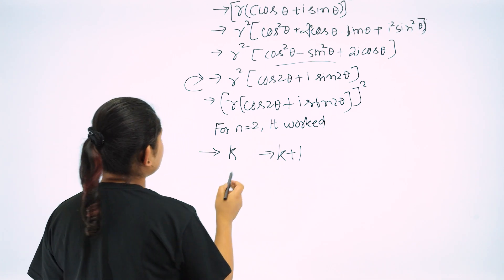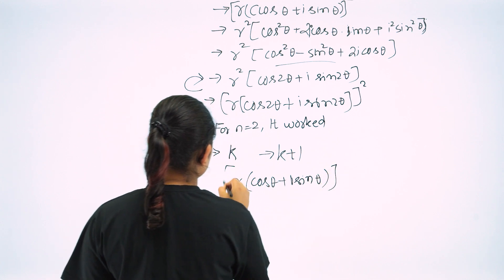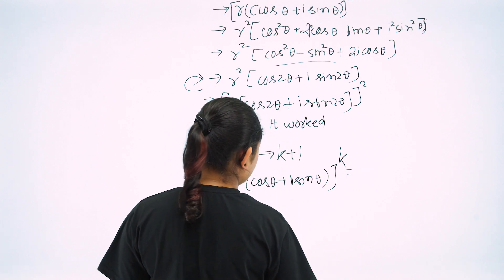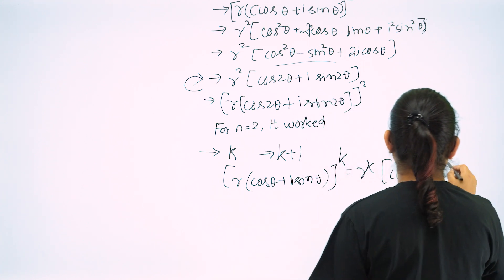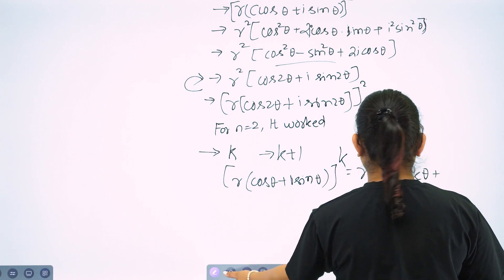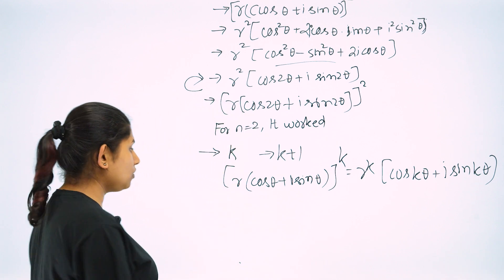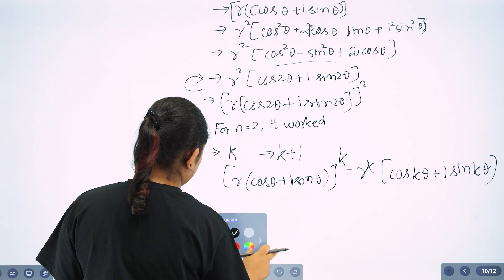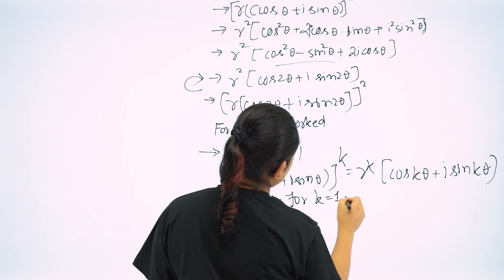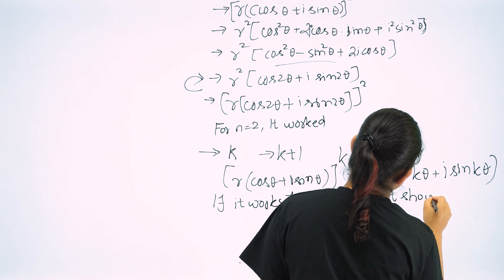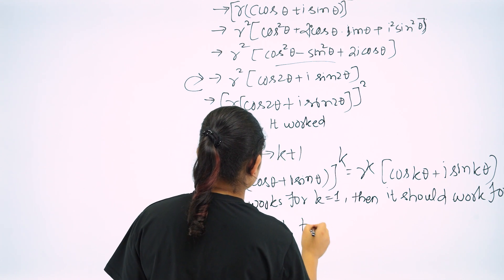So for k, r cos theta plus i sin theta power k has to equal r to the power k times cos k theta plus i sin k theta. It should also work for k plus 1 if it works for k.